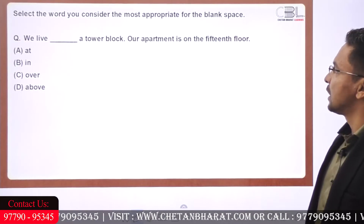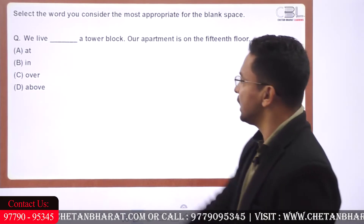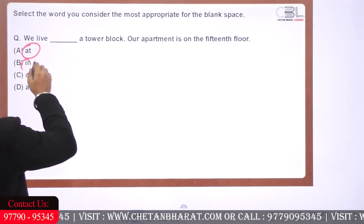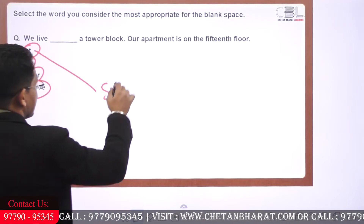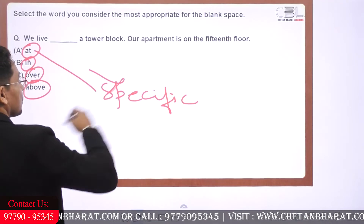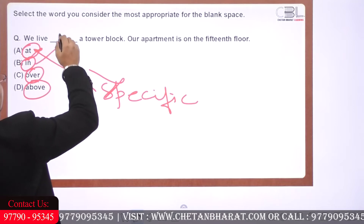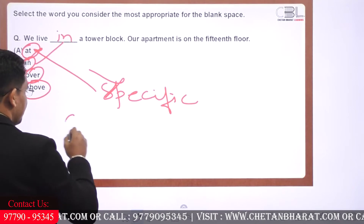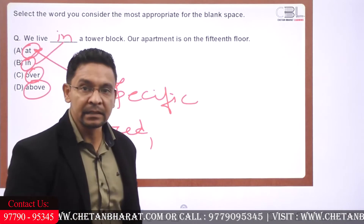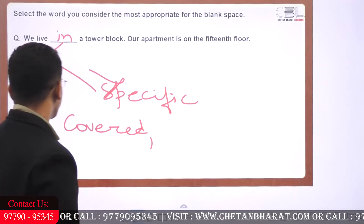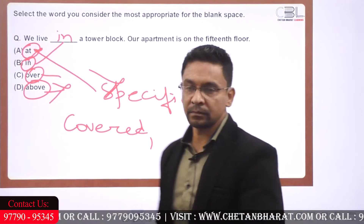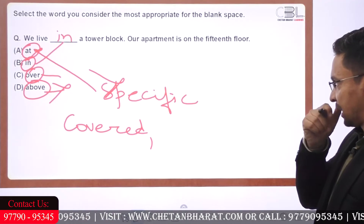Next one. We need to select the word that is the most appropriate — fill in the blank. 'We live ___.' For specific places, 'at' is used when standing at a corner. 'In' is definitely correct here. Why? We are covered — so for blocks, cities, areas, sectors, villages, we use 'in.' 'Over' and 'above' are obviously not the correct choices here.